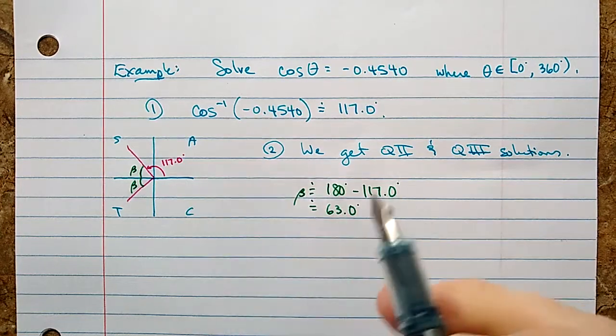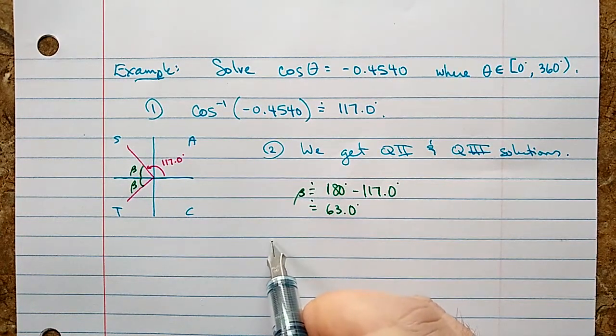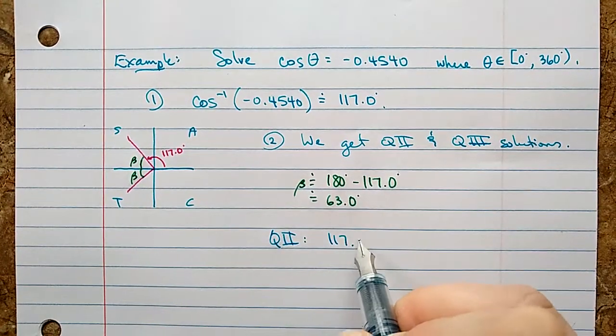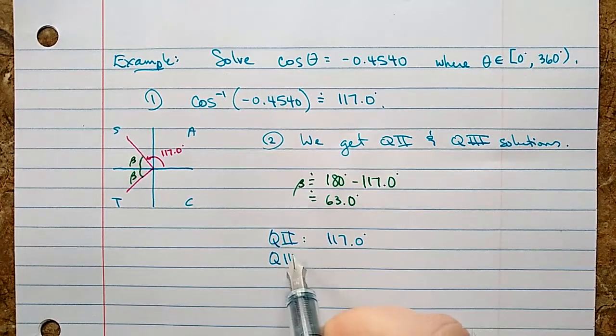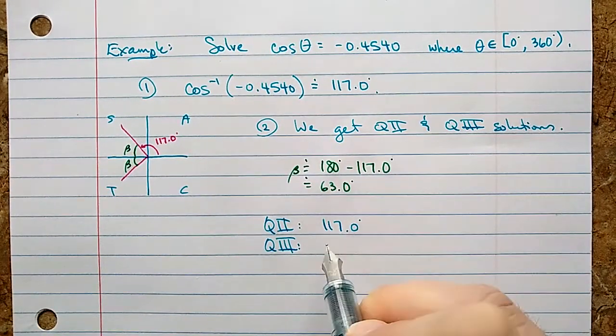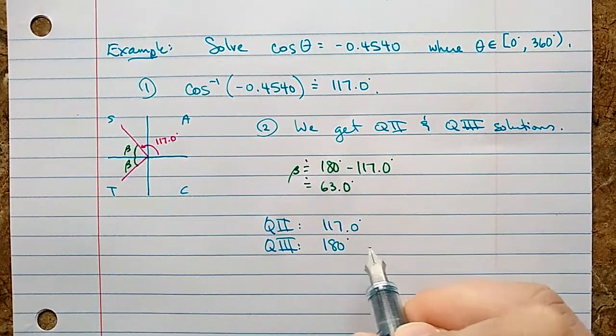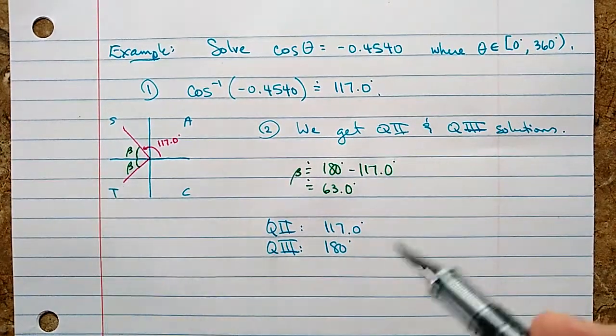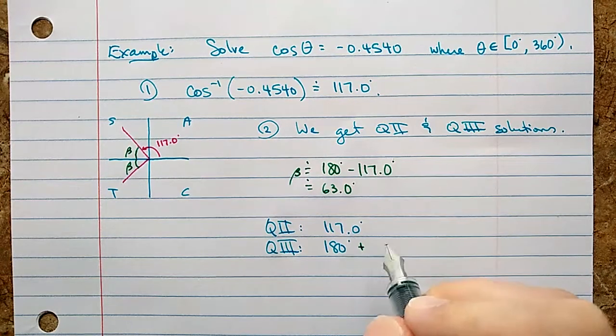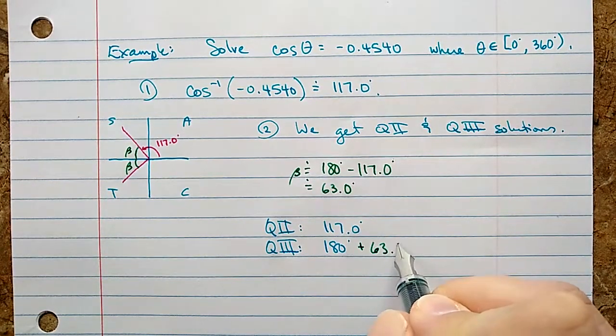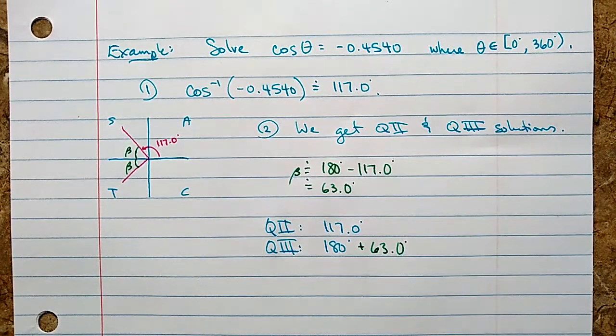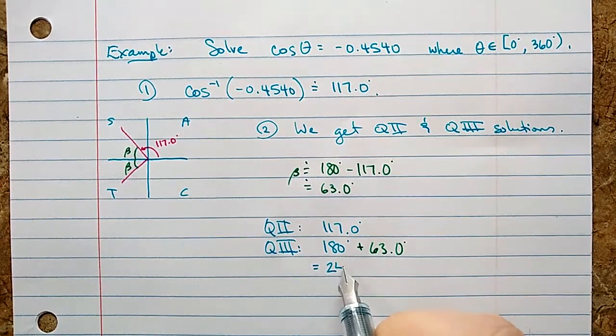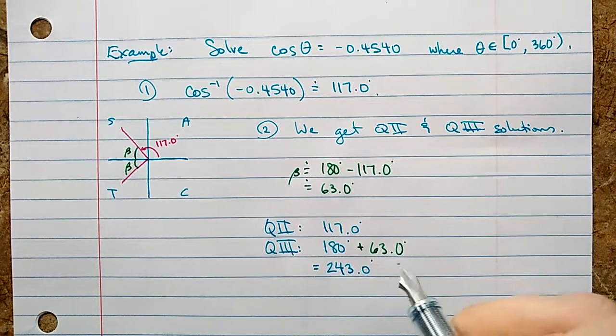So we have our Q2 solution at 117.0 degrees. For Q3, quadrant three, we take 180 degrees and to that we will add beta to go past 180 down to this other pink line here. Beta is 63, so that's 243.0 degrees approximately.